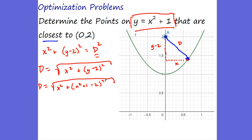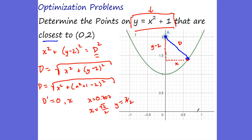D equals the square root of X squared plus (X squared plus 1 minus 2) squared. Define this in your calculator, take the derivative, set it equal to zero, and solve for X. You get X equals 0.707, which is root 2 over 2. Plug that back into Y equals X squared plus 1 to get Y equals 3/2. So at approximately (0.707, 1.5), that point on the parabola is the closest value to (0, 2), minimizing the distance D. That's optimization.